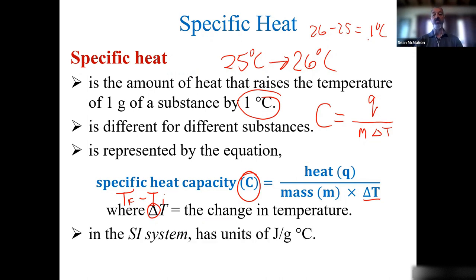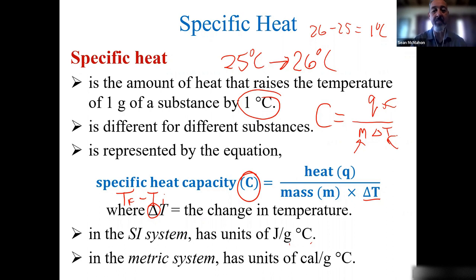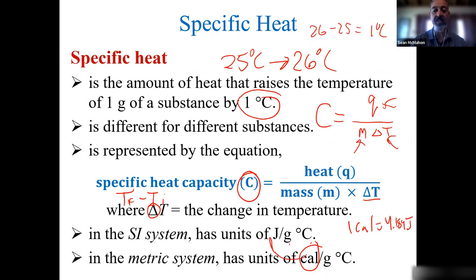In SI units, specific heat is expressed as joules per gram degree Celsius. In the metric system using calories instead of joules, we use the conversion factor: 1 calorie = 4.184 joules, so we can convert the unit of heat back and forth between calories and joules.